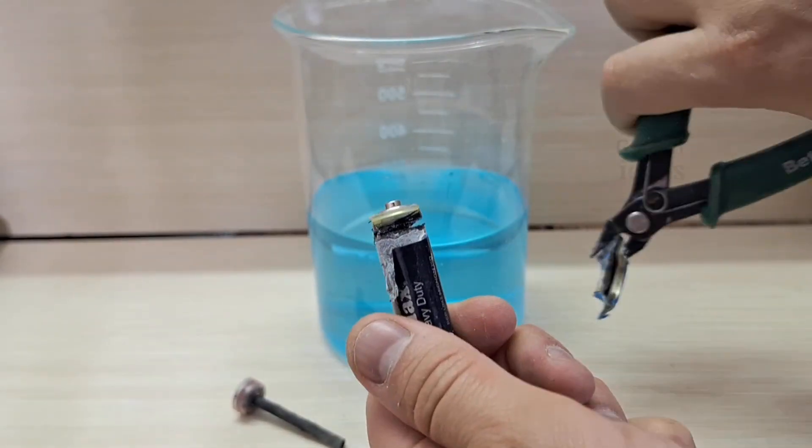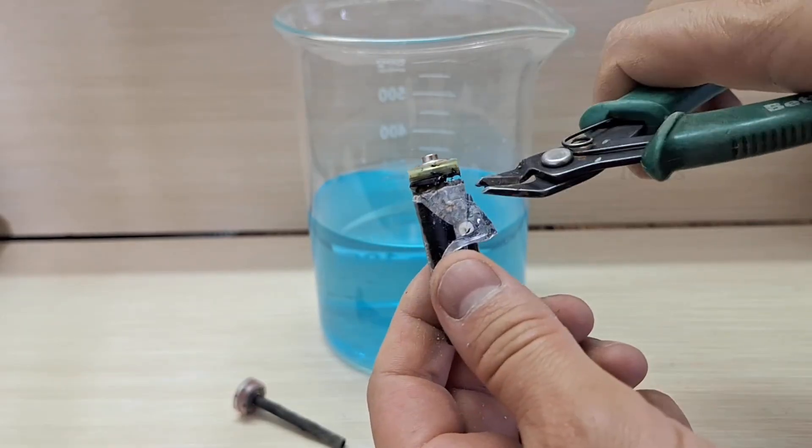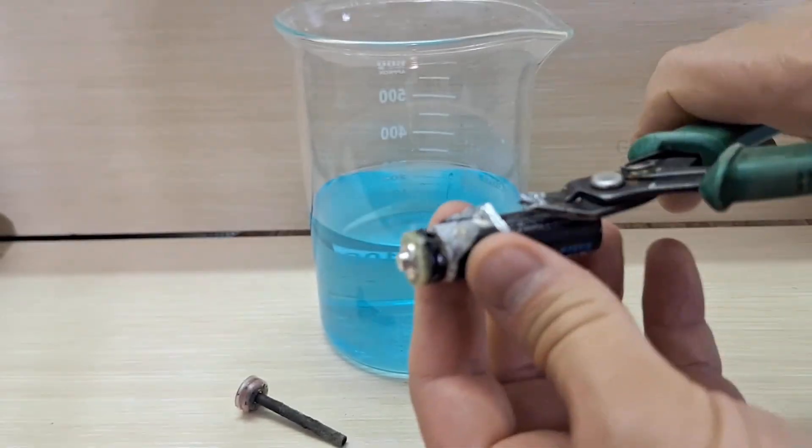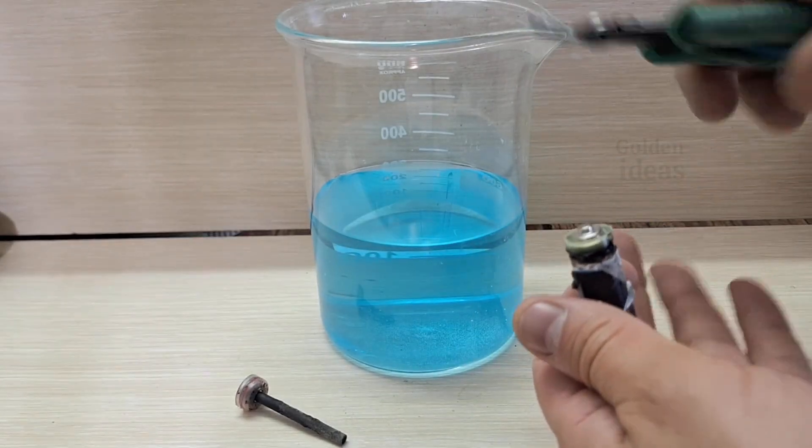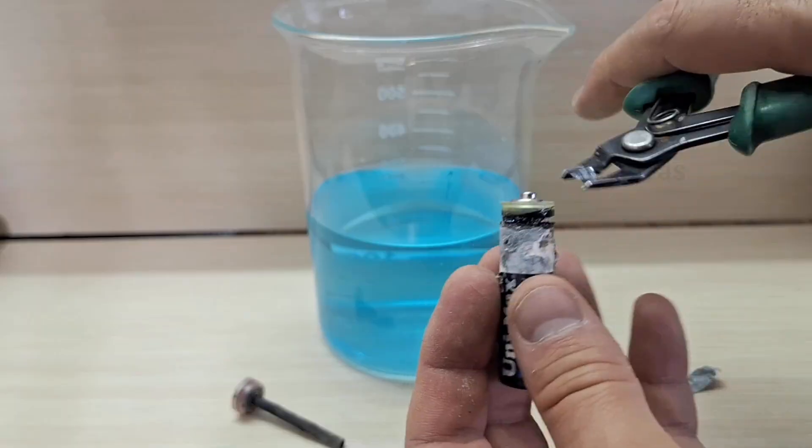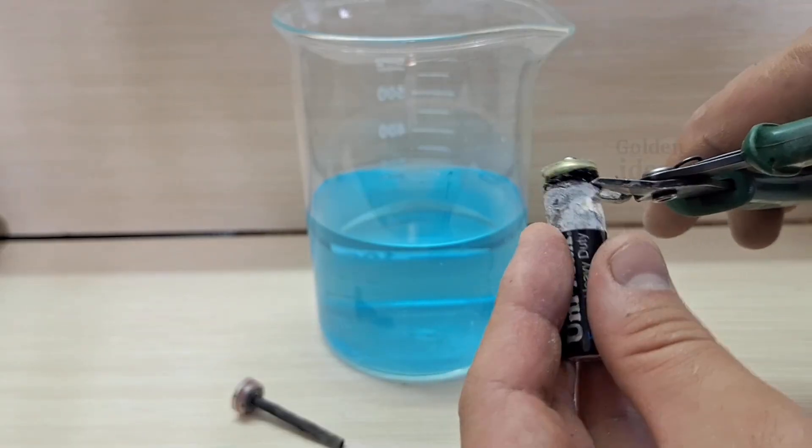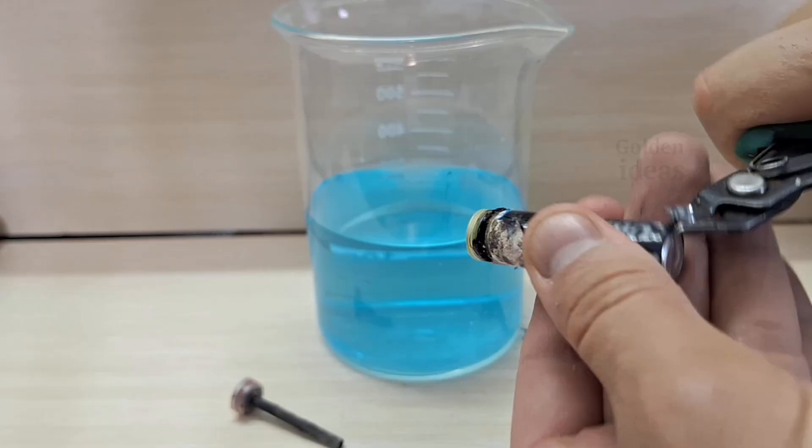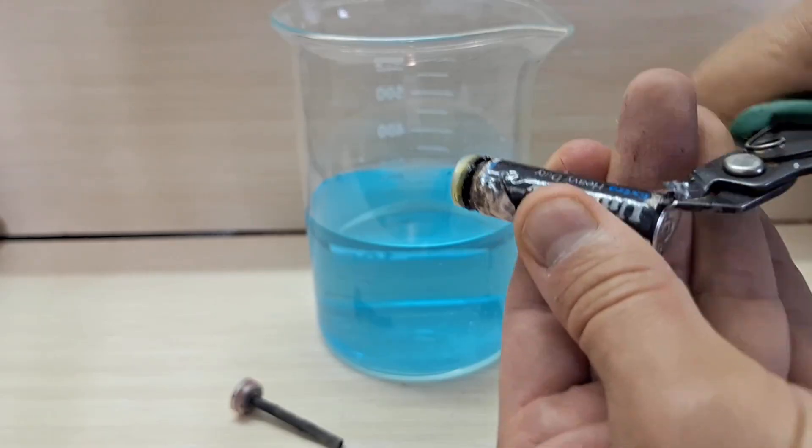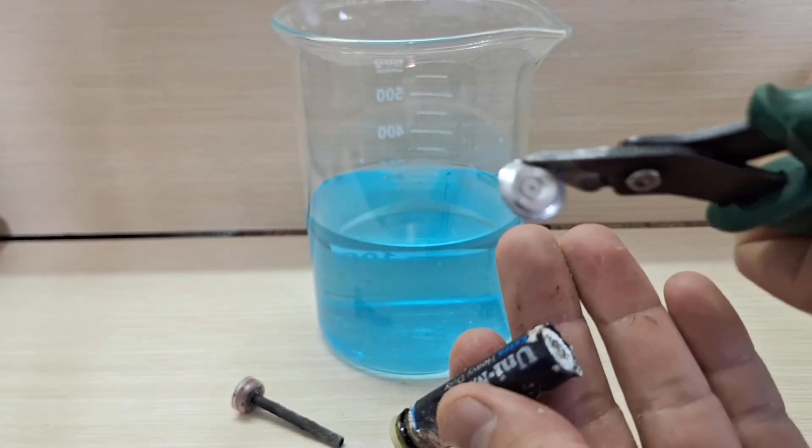Now that the battery is open, let me explain what we're looking at. The metallic casing you see is made of zinc, which acts as the anode. And this black powdery material around the graphite is carbon mixed with manganese dioxide and either ammonium chloride or zinc chloride. This mixture stores and transfers electrons during the battery's operation.